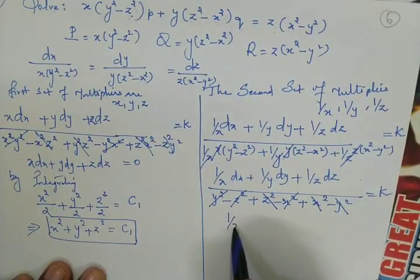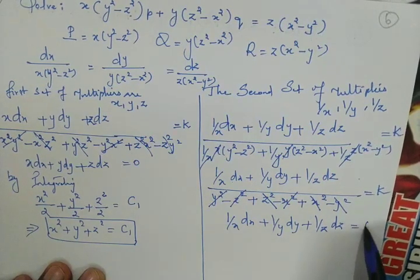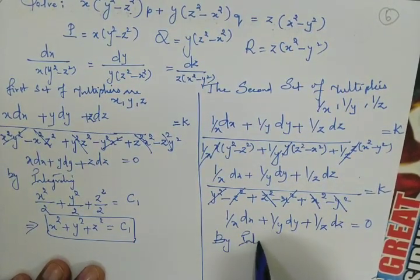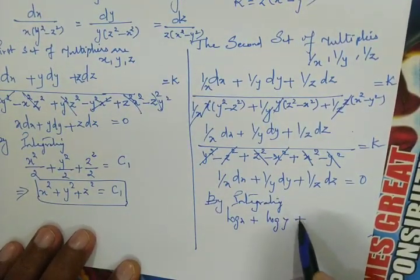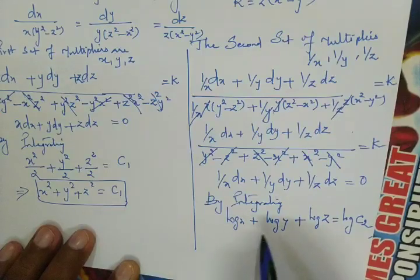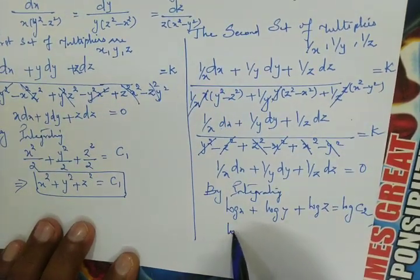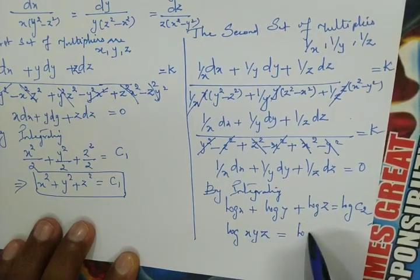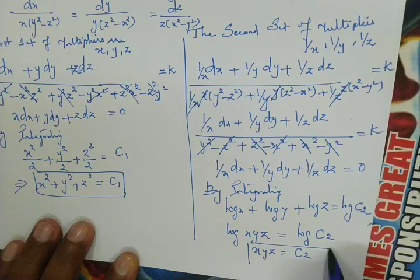Since the denominator is zero, we get (1/x)dx + (1/y)dy + (1/z)dz = 0. Integrating: log x + log y + log z = log c₂. Applying log properties, log(xyz) = log c₂, so canceling the logs we get xyz = c₂. This is the second part of the solution.